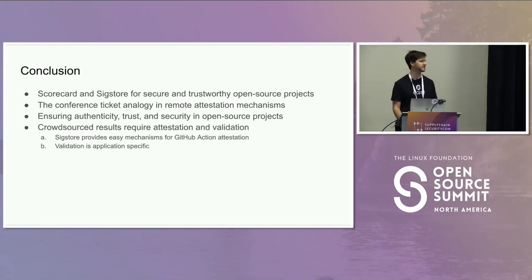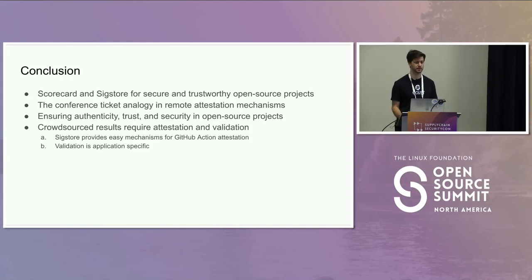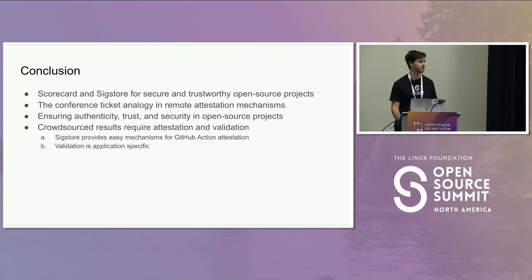In conclusion, Scorecard and Sigstore combined make for secure and trustworthy open source projects — Sigstore from a provenance and attestation point of view, and Scorecard for development best practices. Crowdsourced results require two steps: provenance and attestation, and then validation. For anyone looking to do crowdsourced research on GitHub, I recommend Sigstore as an easy mechanism — the keyless signing with OIDC makes it pretty easy. Your validation steps will depend on your use case, but you've got a demo of how Scorecard checks its workflow contents.